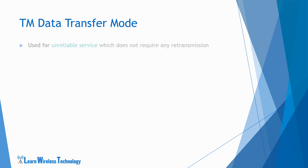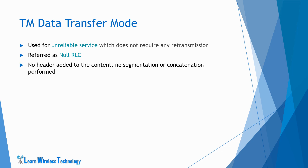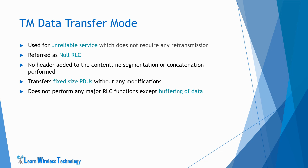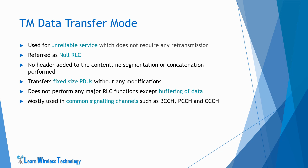First is transparent mode. This mode is used when using an unreliable service which does not require any retransmission. It is sometimes regarded as NULL RLC since it does not modify the content and simply passes through — the RLC layer does not add any header or overhead, and does not perform segmentation or concatenation. It just transfers fixed-size SDUs to the lower or upper layers without any modifications. The only operation it performs is buffering, where it keeps the input data in its buffer for a certain amount of time and discards it if not transmitted within that timeframe. It is mostly used in common signaling channels such as BCCH, PCCH, and CCCH.